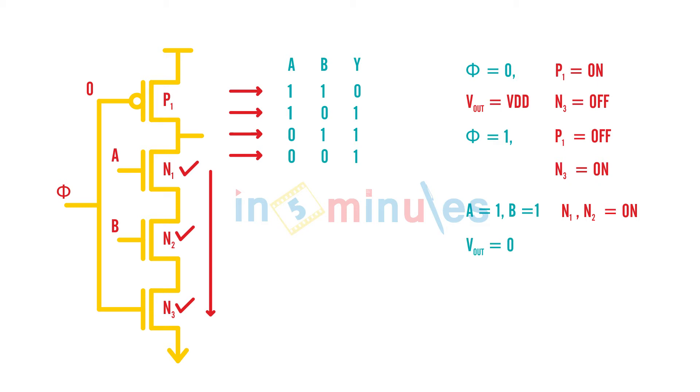Okay, case number 2: A is 1, B is 0. A 1, B 0, and because phi is equal to 1, N3 is on. So this N3 is on, this is off, and N1 is on, so no path to ground. So output has to be equal to, from the truth table, equal to 1.